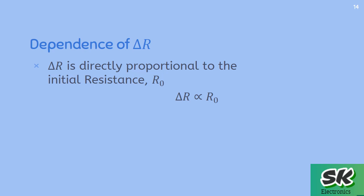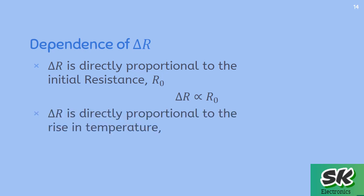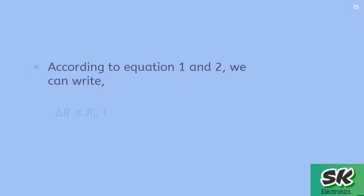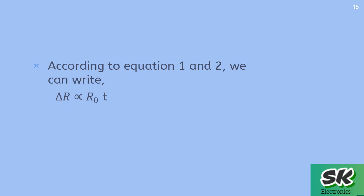Change in resistance is also directly proportional to the rise in temperature, and it also depends on the nature of the conductor. From these relationships, delta R is directly proportional to R₀ and temperature t. Removing the proportionality sign, we introduce constant alpha, so the equation becomes: Rt minus R₀ equals alpha × R₀ × t.